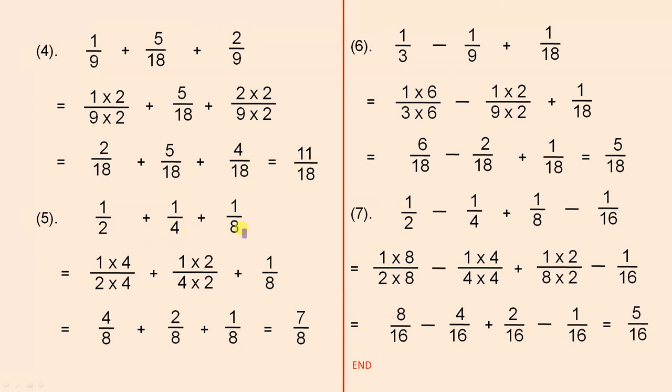Here we have 3 different denominators. What do we need to multiply the 2 by to give us 8? 4. What do we multiply the 4 by to give us 8? 2. So there's the working on that line. So that gives us 4 over 8 plus 2 over 8 plus 1 over 8. That's 7 over 8.